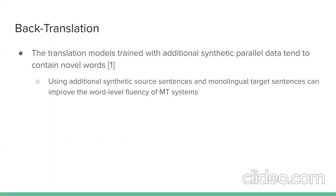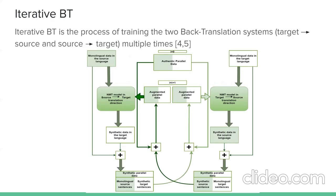Systems trained with additional monolingual or synthetic data have a higher proportion of novel words, indicating that additional monolingual data improves word-level fluency of NMT systems. Iterative back-translation is the process of training two back-translation systems in target-to-source and source-to-target directions multiple times, until no improvement is observed in either translation direction.